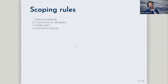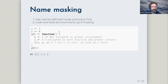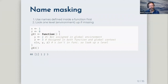R has four basic scoping rules: name masking, functions versus variables, a fresh start for each new function call, and dynamic lookup. For name masking: R uses names defined inside a function first. If it's missing a name within the function definition, it looks one level up — to the global environment, or into the environment of the function above it if called by another function.